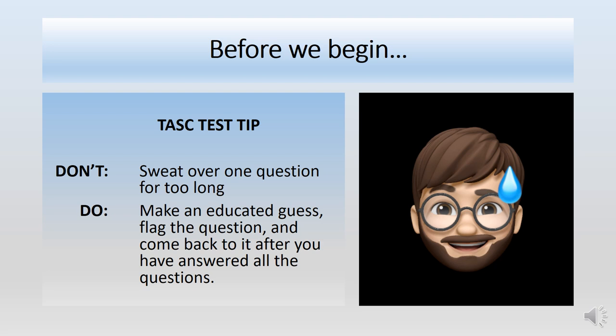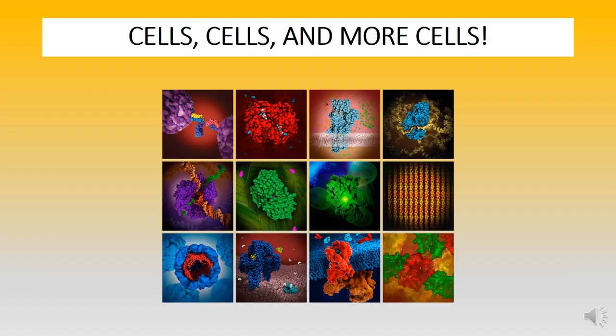If you read a question and you have no idea what the answer is, just make a guess, flag the question, and move on. Once you've gotten through the entire test, go back to the questions you flagged. If you run out of time, at least you've marked something — giving you a one in four shot of getting it correct. It's all about strategy.